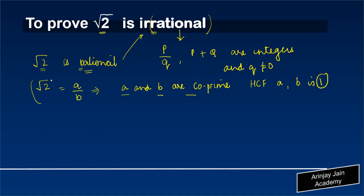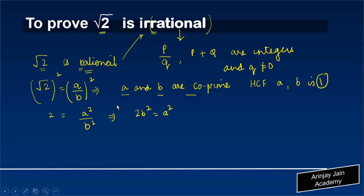Now, if I square both these sides, we will get 2 is equal to A square upon B square. Cross-multiplying, you will get 2B square is equal to A square. If you notice, in this particular case, A square is written as 2 multiplied by B square.